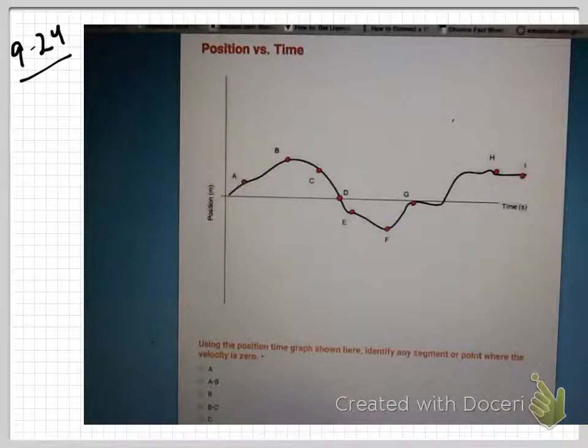As we're looking at this quiz, the first graph you're looking at is a position-time graph. So on a position-time graph, where do you find velocity? And the first question is, where is the velocity zero?